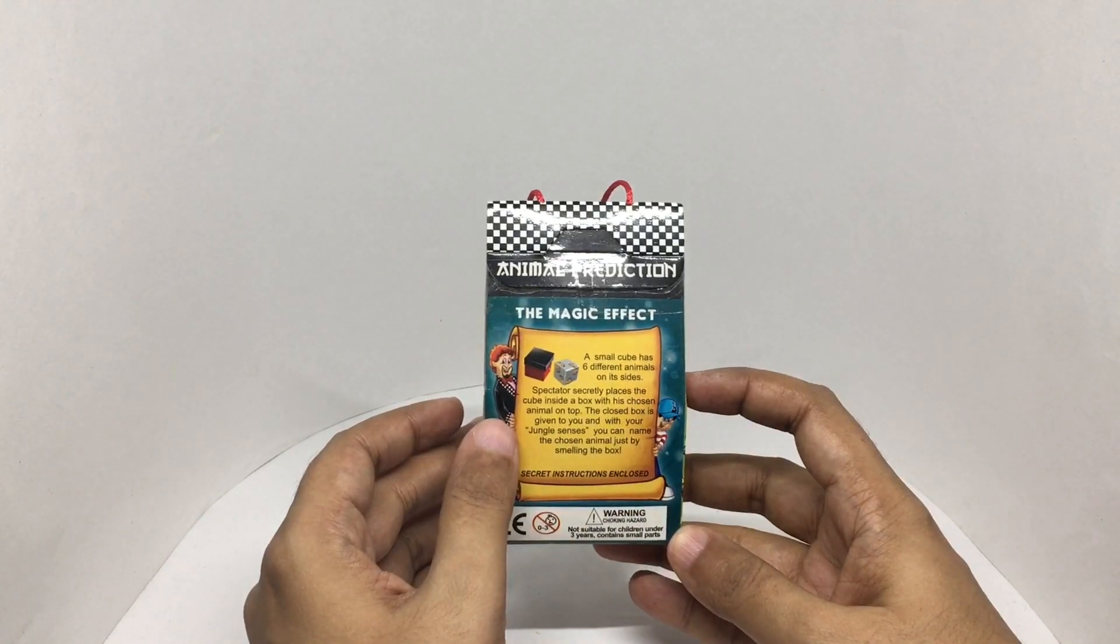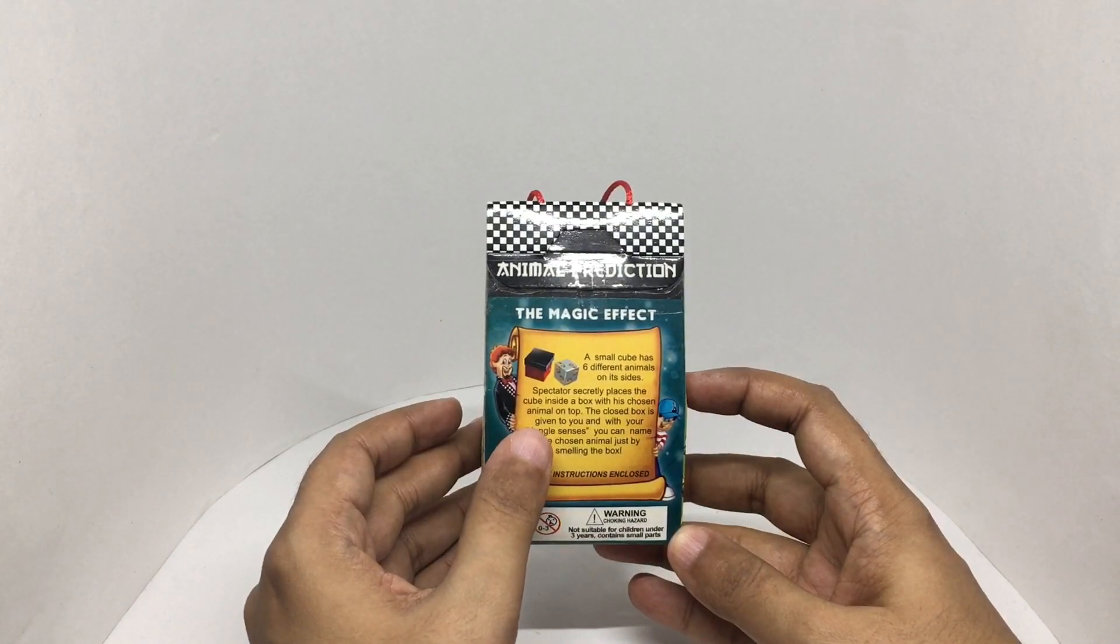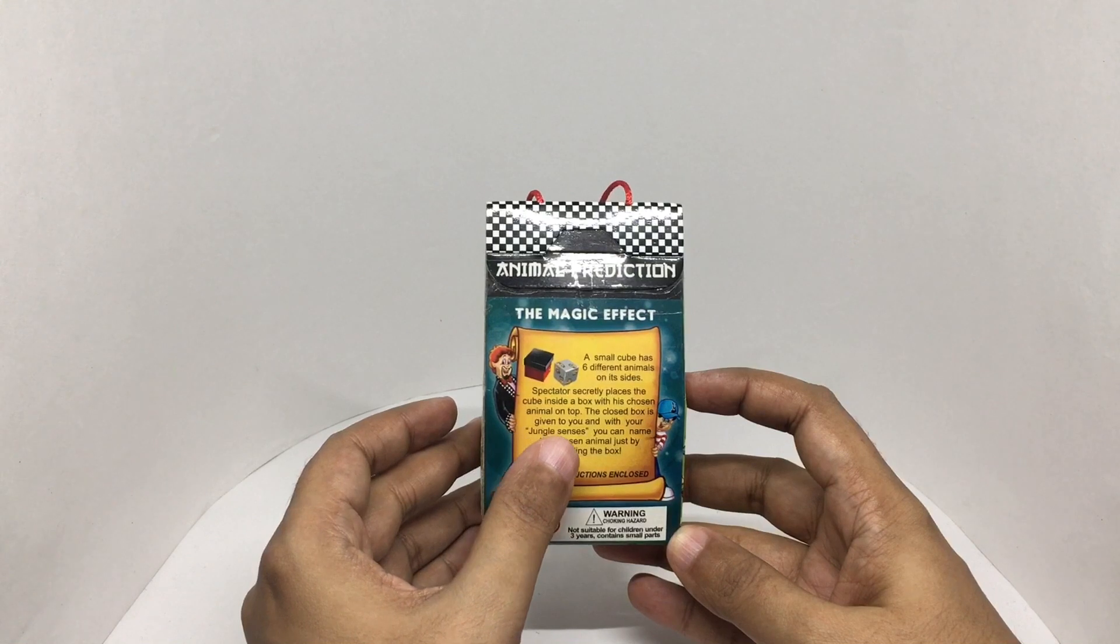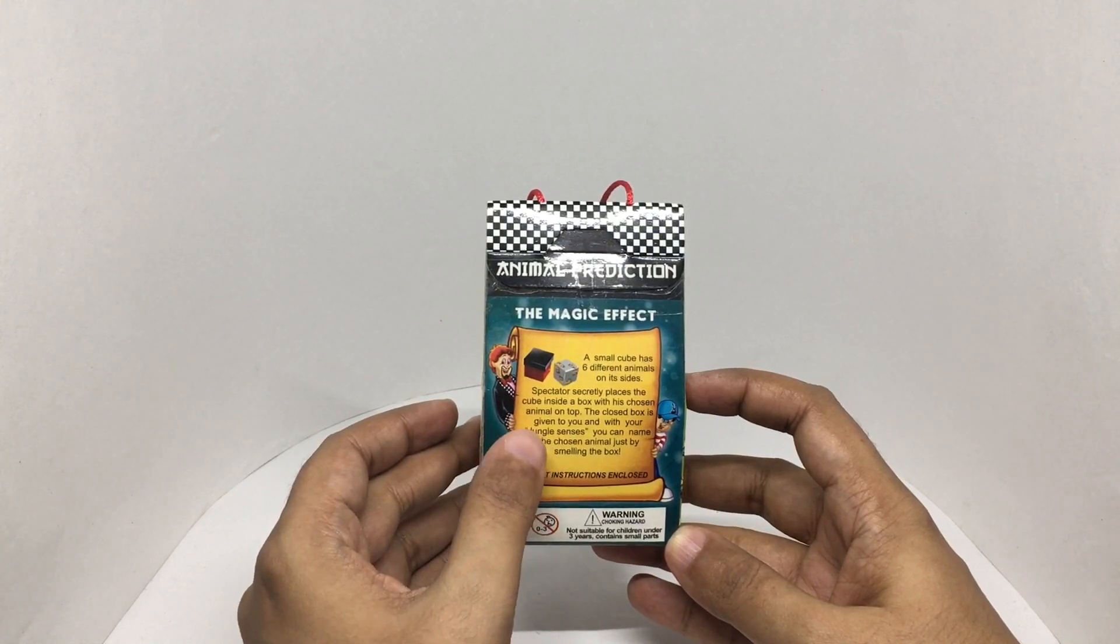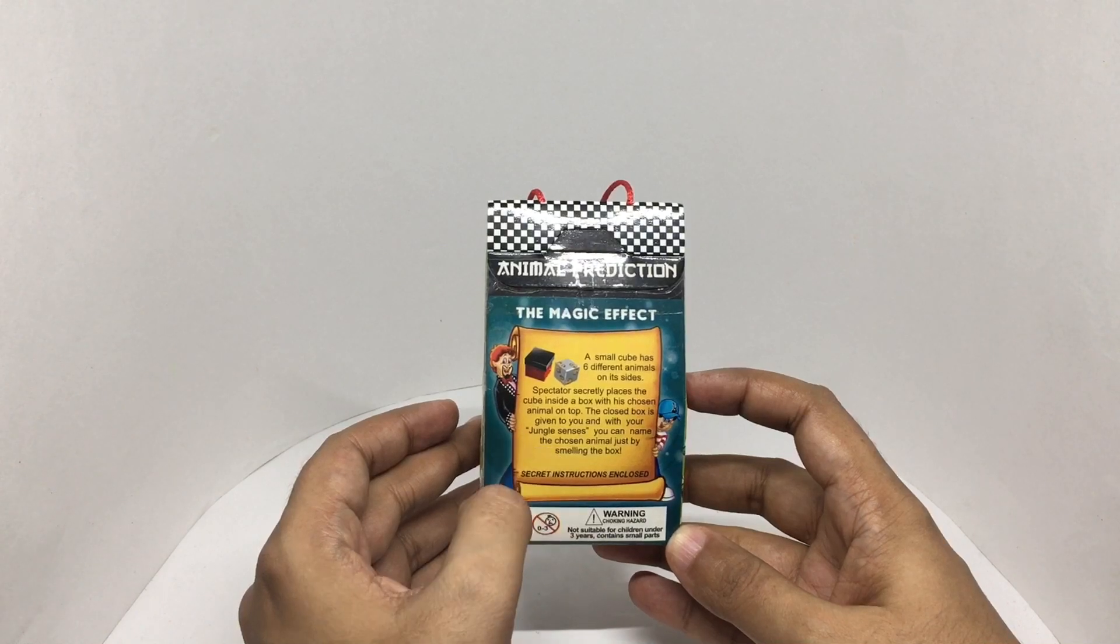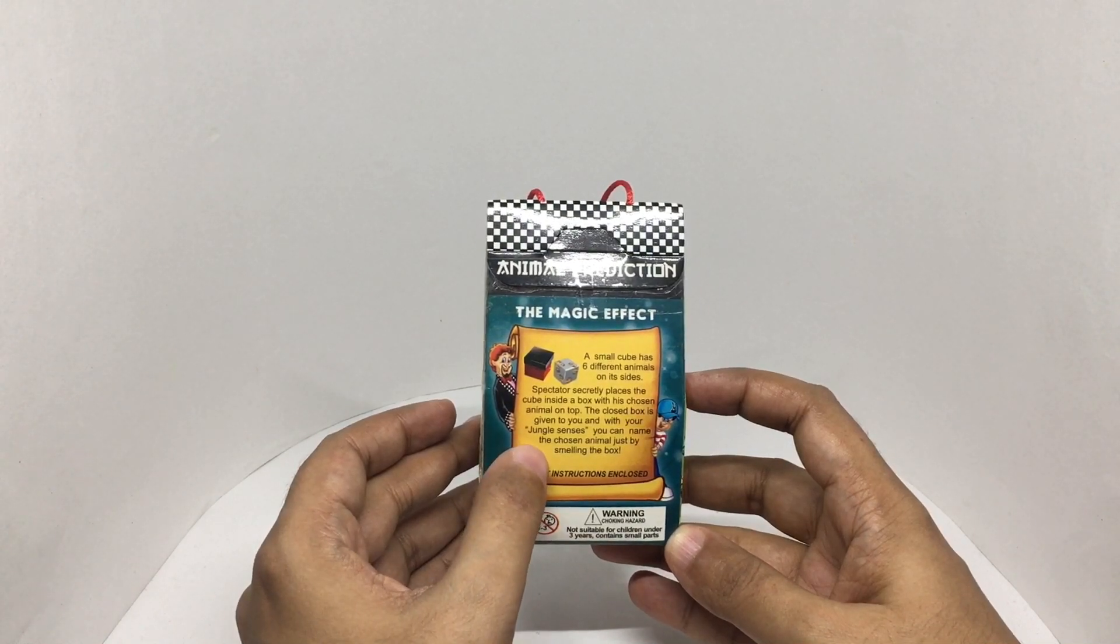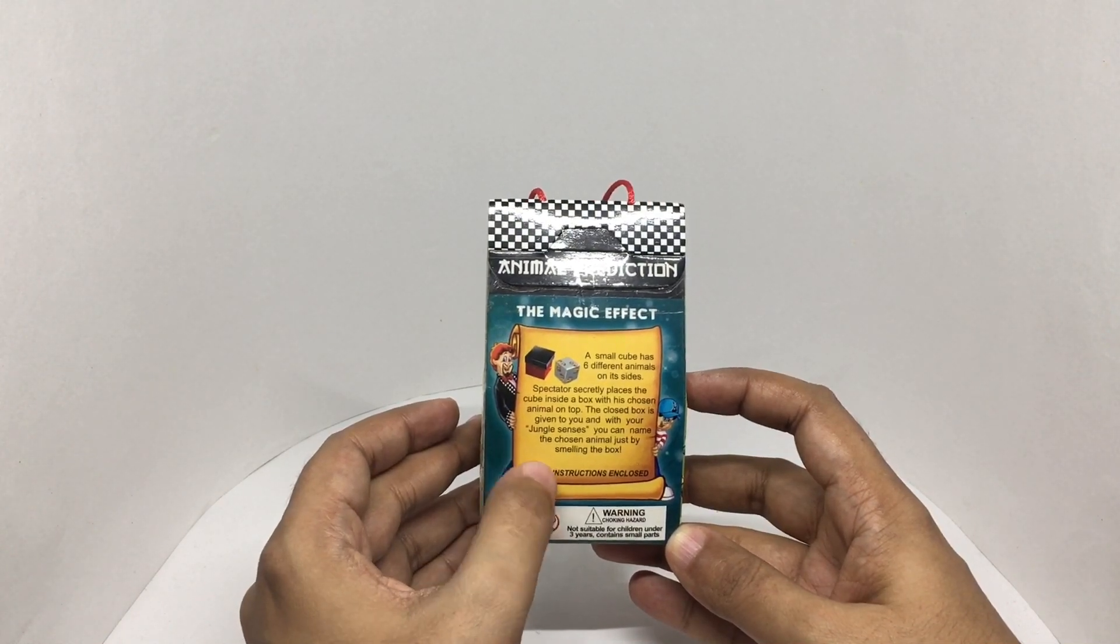Spectator secretly places the cube inside the box with his chosen animal on top. The closed box is given to you with your jungle senses. You can name the chosen animal just by smelling the box.